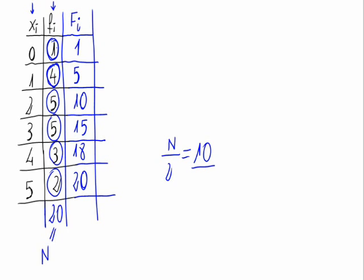In case the 10 didn't appear, the first value whose absolute cumulative frequency is higher than 10 would be the median. In our case, we see that we have a value which its absolute cumulative frequency is n divided by 2, 10.